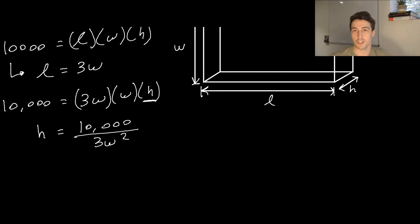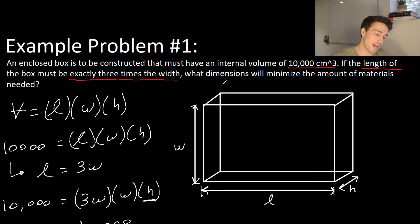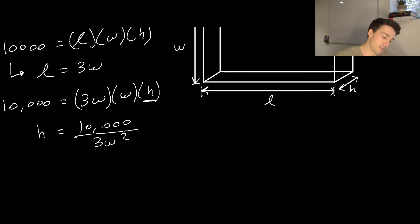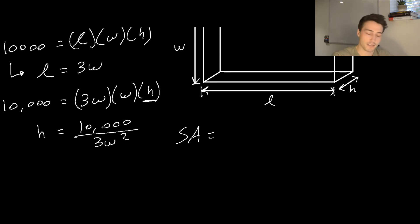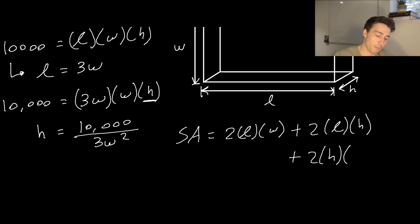Now we're going to write out the function we're going to maximize or minimize. In this case, we're trying to minimize the amount of materials needed, so that comes down to the surface area. For a box, surface area equals two times L times W, plus two times L times H, plus two times H times W. That would be the surface area of this box, and we're trying to minimize it because we're trying to minimize the amount of materials we need.